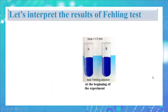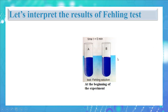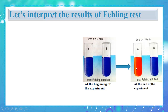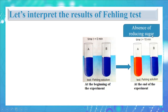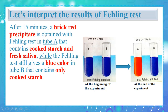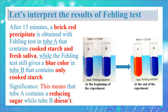Now let's interpret the results of the Fehling test. At the beginning, both tubes show blue color with Fehling solution, indicating the absence of reducing sugar. At the end, the Fehling solution changes to brick red in tube A, indicating the presence of reducing sugar, while it remains blue in tube B, indicating no sugar. After 15 minutes, a brick red precipitate is obtained with Fehling test in tube A containing cooked starch and fresh saliva, while tube B containing only cooked starch still gives the blue color. Tube A contains reducing sugar while tube B does not.